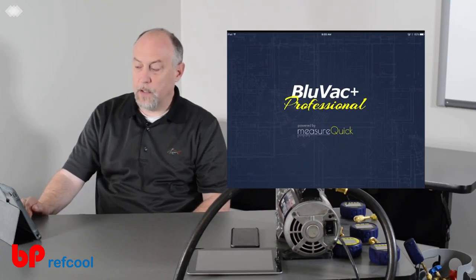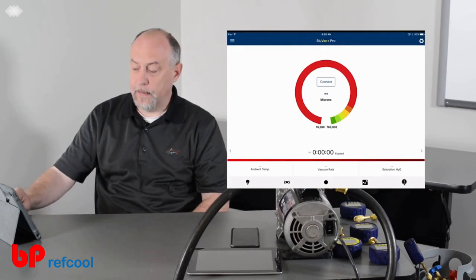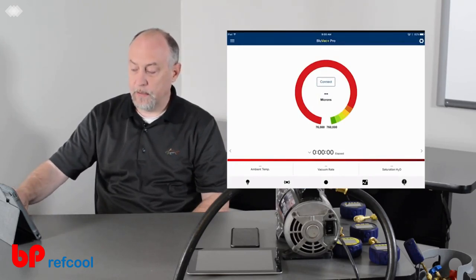Now we're going to go ahead and open up the Bluvac application. It'll take just a second to load up. When it loads up, we're going to get the main display, which is our vacuum progress indicator.